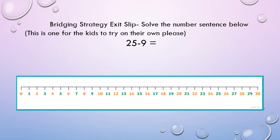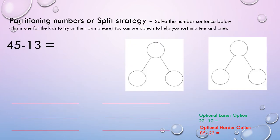Then we've also got our bridging strategy exit slip. Solve the number sentence below. This one is for the kids to try on their own please. So it doesn't matter if we get this wrong, it's just a little bit of practice and it shows your teachers how you've gone with this activity. So 25 takeaway 9. So we're going to use our bridging strategy here and you can draw it on a piece of paper if you wish, or you can use some other options that I've got for you which you'll see in a minute.